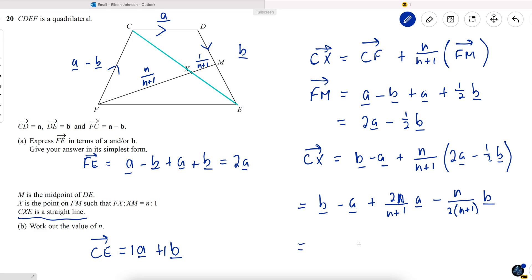I'm going to collect together the components, so this one first, 2N over N plus 1 minus 1A. Minus N over 2N plus 1, B.